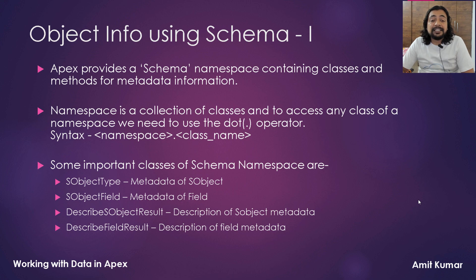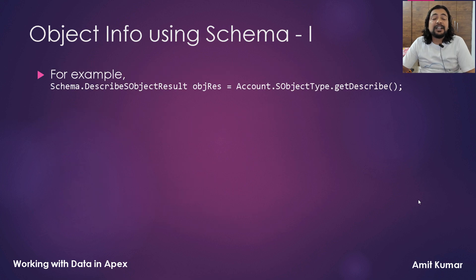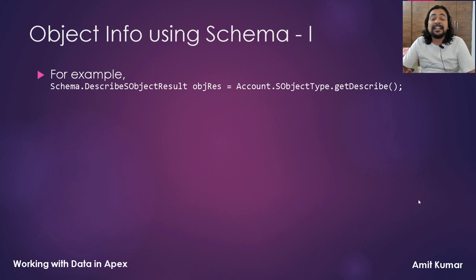These are some important classes of the schema namespace that we will use to get metadata information from objects and fields. SObjectType class represents the metadata or token of an SObject. SObjectField represents the metadata or token of a field. DescribeSObjectResult class represents the description of SObject metadata, and DescribeFieldResult class represents a description of field metadata. For example, to get the metadata description of the Account object, we call Account.SObjectType to get the token, then call the getDescribe method to get the full metadata description, which can be stored in a DescribeSObjectResult object.